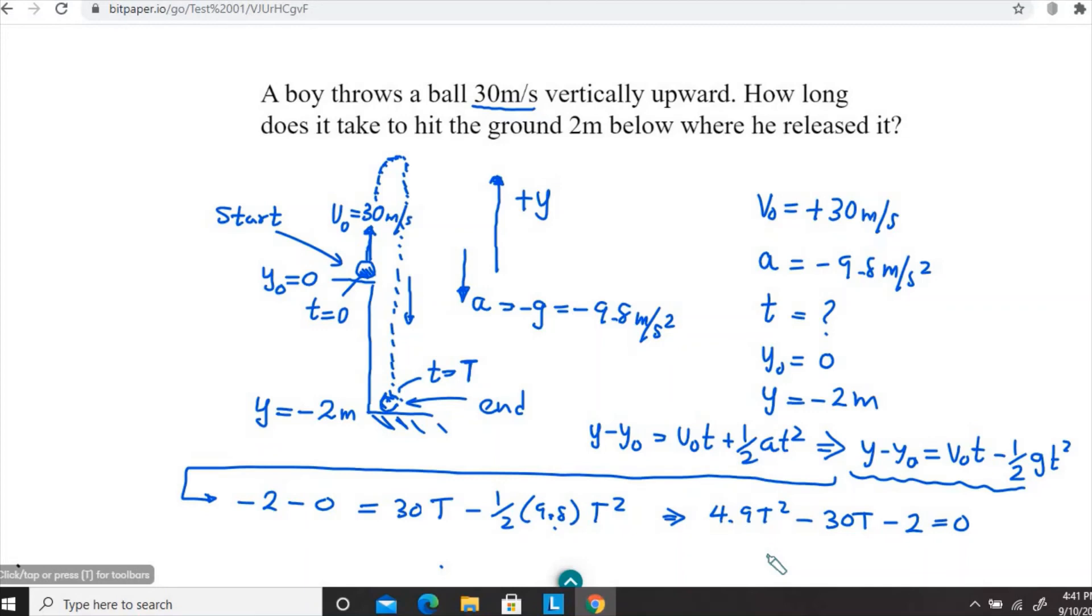This original equation becomes y minus y naught equals v naught t minus one half g t squared. That's the equation that I'm going to use to solve this problem.